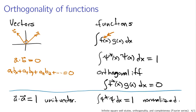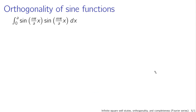Orthogonality is really useful because integrals like this appear a lot in quantum mechanics, and it's very handy when we can look at an integral and say it's zero. In the case of the particle in a box, the infinite square well potential, we got sine functions. Sine functions obey an orthogonality condition. The orthogonality integral, going between 0 and a, has the sine of n pi over a times x, times the sine of m pi over a times x, where m is not equal to n.